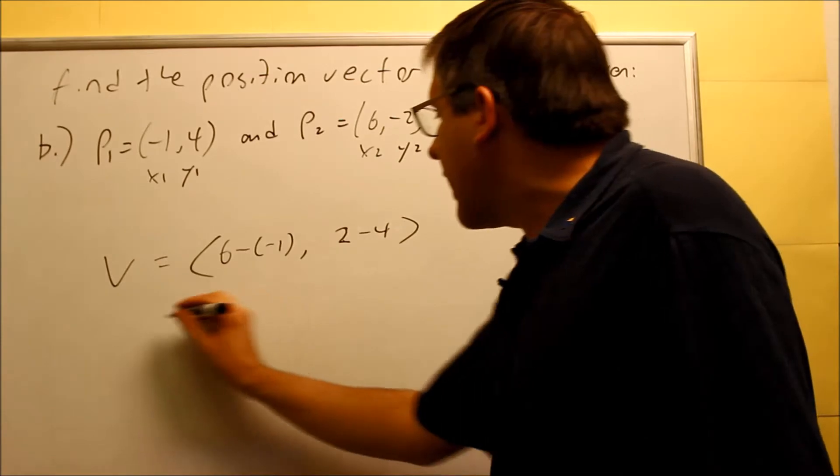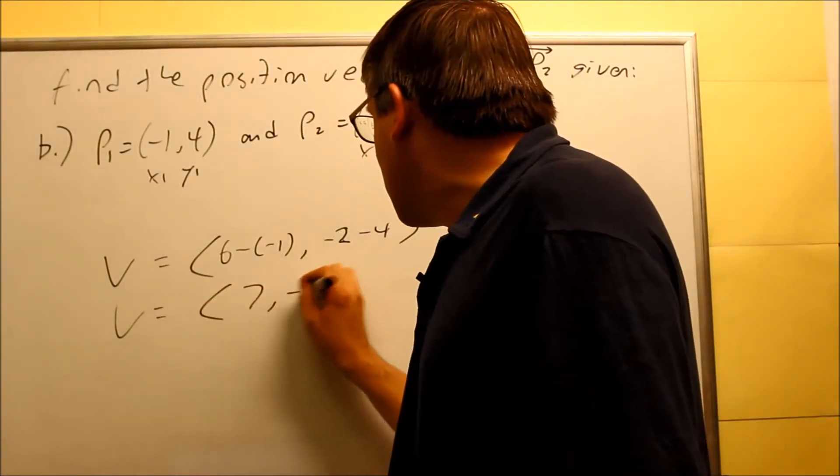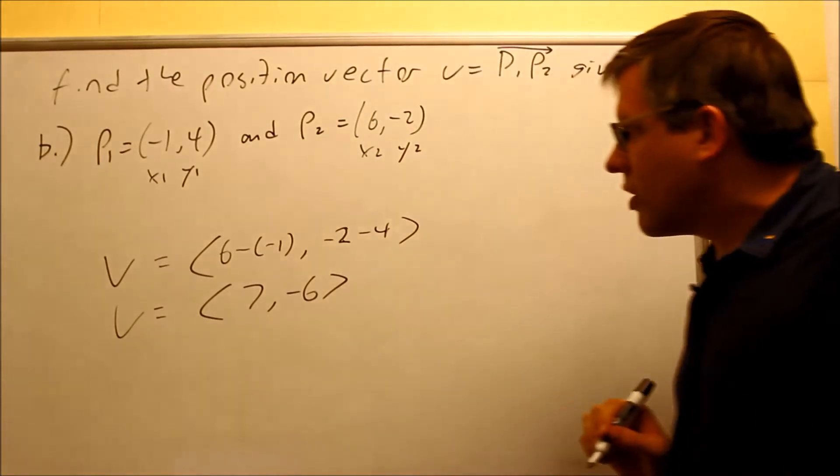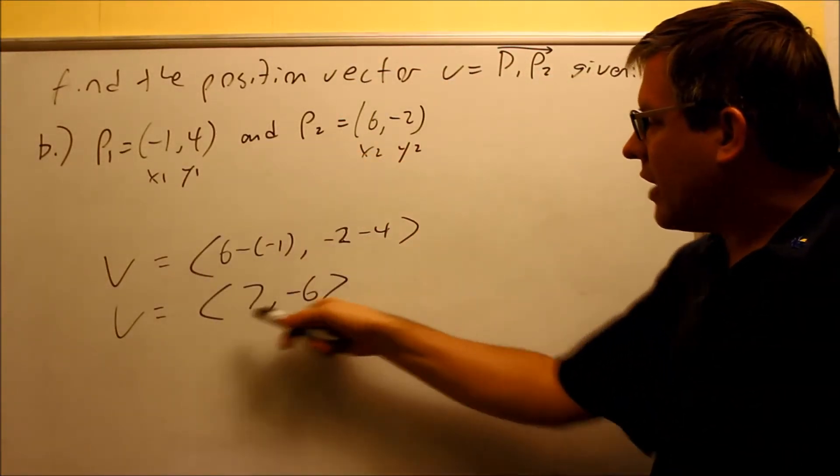And if we do that, we're going to get 7 and negative 6. So we have negative 2 minus 4 was this last one here and we got that as your answer.